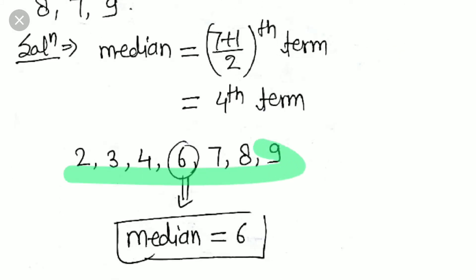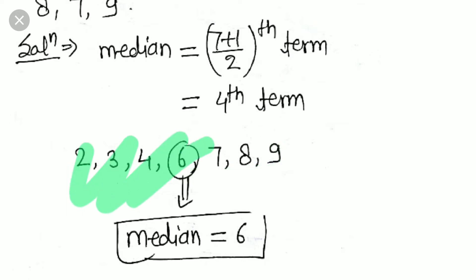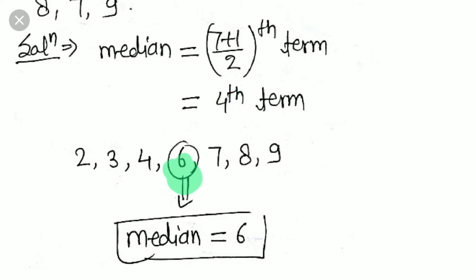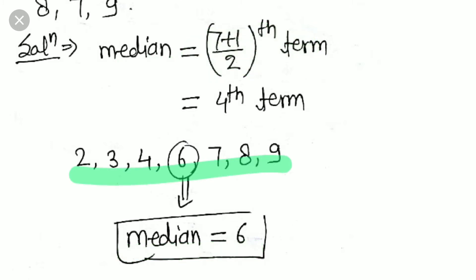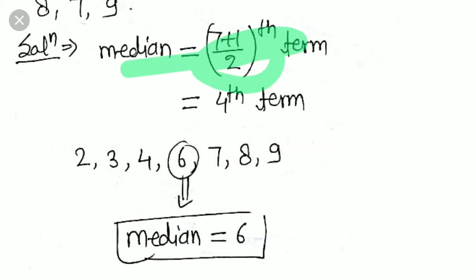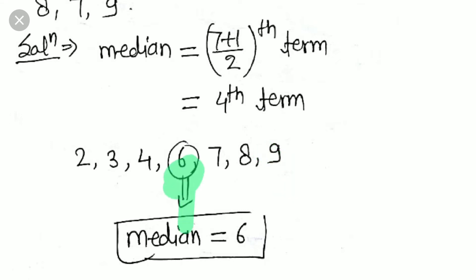Arranging the data in ascending order: 2, 3, 4, 6, 7, 8, 9. The 4th term is 6, so the median is 6. Note: when the number of terms is very small, there is no need to apply the formula — just arrange and pick the middle value. The formula is helpful when the number of terms is large, like 50, 60, or 100.